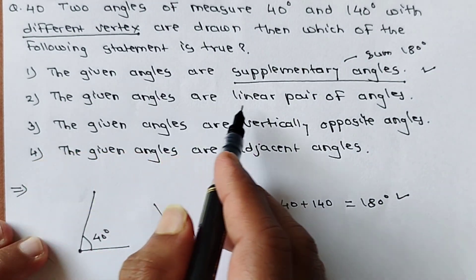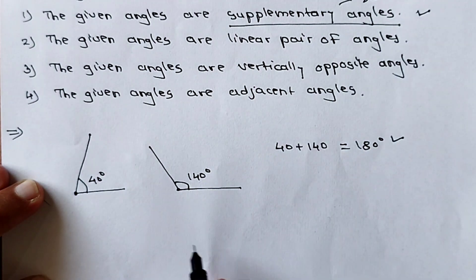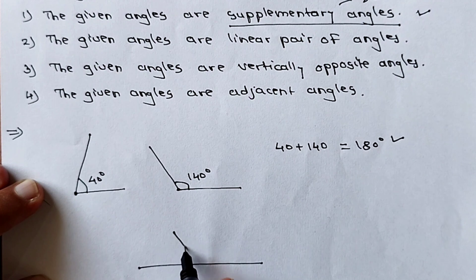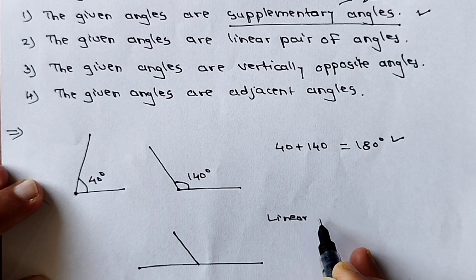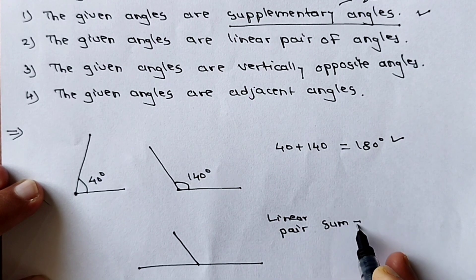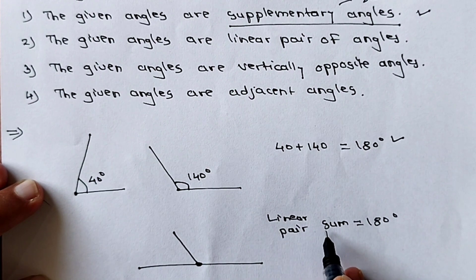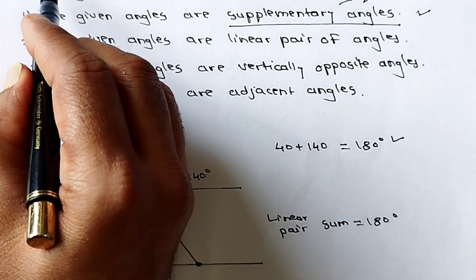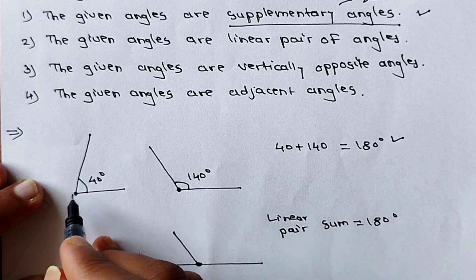Second statement: the given angles are a linear pair. Linear pair means the sum must be 180 degrees AND the angles must have a common vertex. Though the sum is 180 degrees here, the angles have different vertices. So the linear pair condition is NOT satisfied.